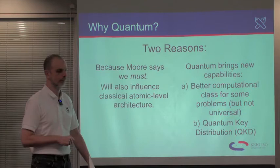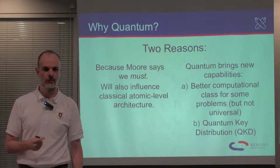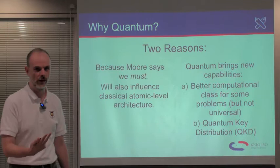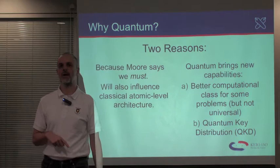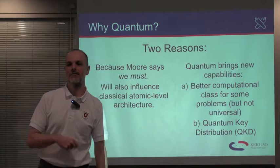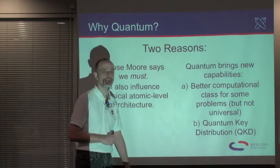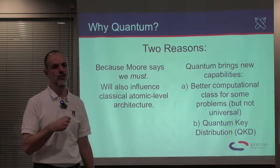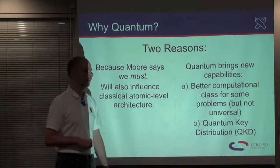We're already essentially at the point where channel lengths are only a handful of atoms and it's completely impossible to ignore quantum effects. Once we're at that level where we have to compute using quantum effects, we have two choices: we can either attempt to suppress those quantum effects, or we can attempt to utilize them for quantum computation. Quantum computation will bring us advantages in the computational complexity class of certain problems, including the most famous one — Shor's algorithm for factoring large numbers, which affects public key cryptography.